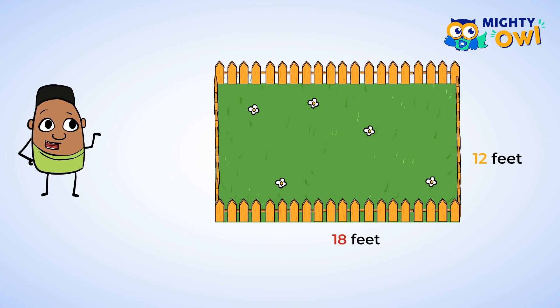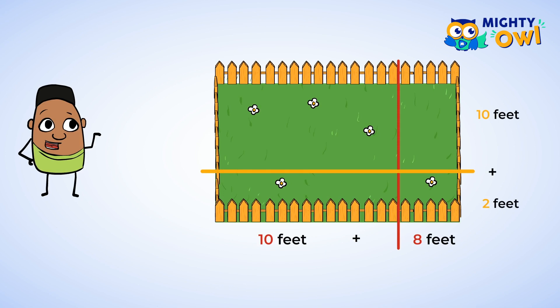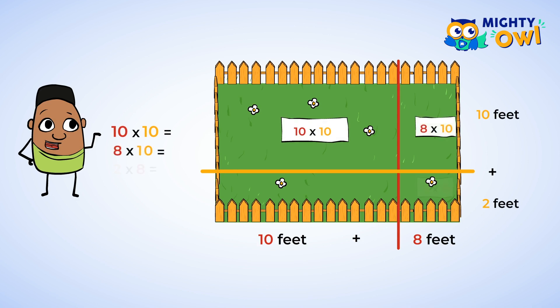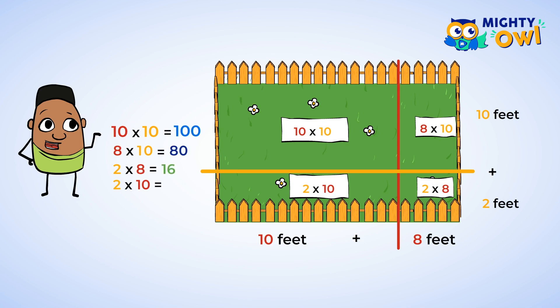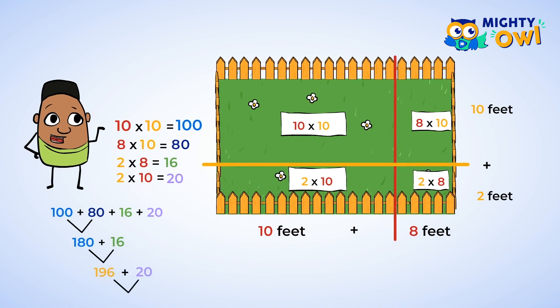Remember that large yard at the start of the lesson? I bet we can already find the area of it. We can split the 18 into 10 plus 8, and split the 12 into 10 plus 2. Let's fill in those measurements and make some multiplication problems: 10 multiplied by 10, 8 multiplied by 10, 2 multiplied by 8, and 2 multiplied by 10. 10 multiplied by 10 equals 100, 8 multiplied by 10 equals 80, 2 multiplied by 8 is 16, and 2 multiplied by 10 is 20. Now it's time to add them up: 100 plus 80 is 180, add 16 to get 196, then add 20 for a total of 216.